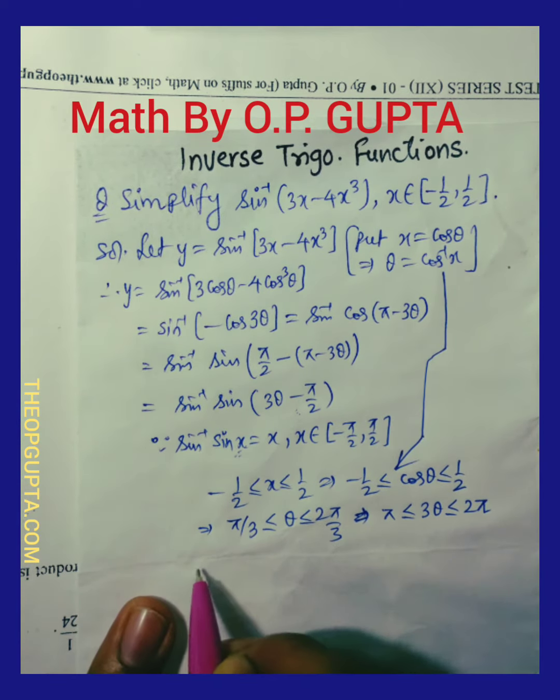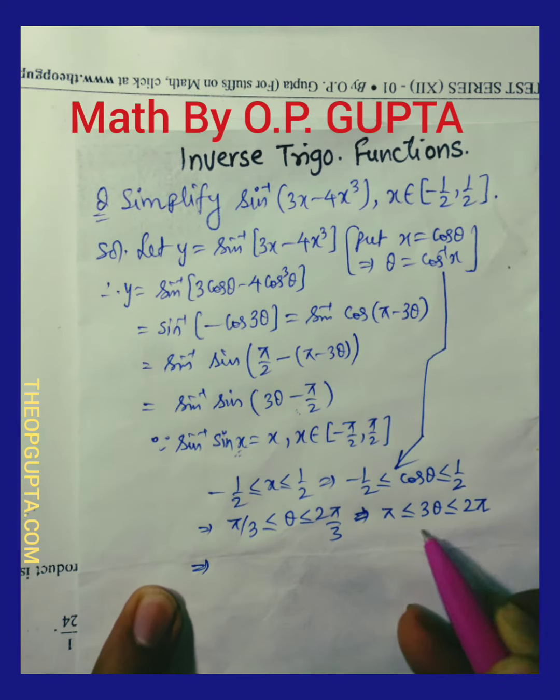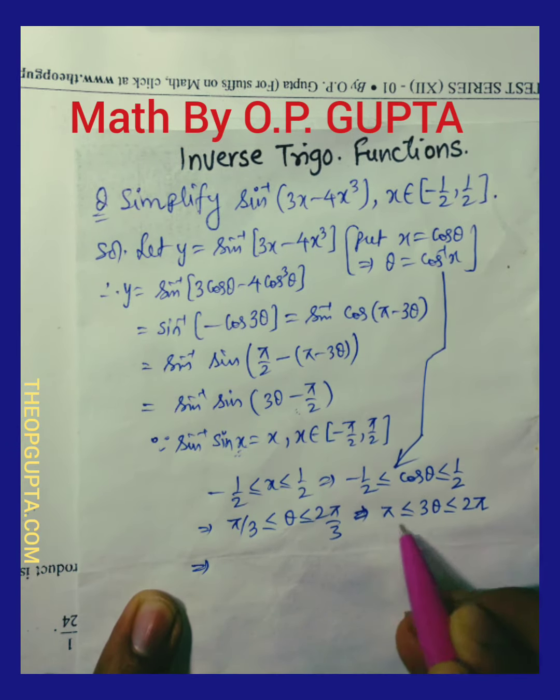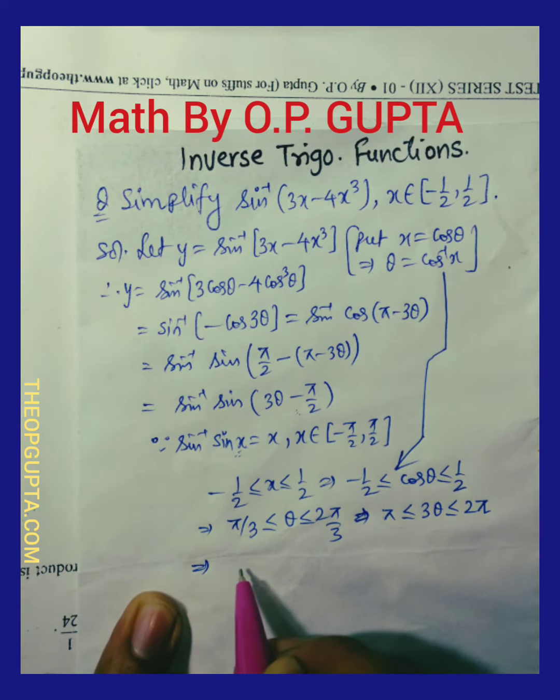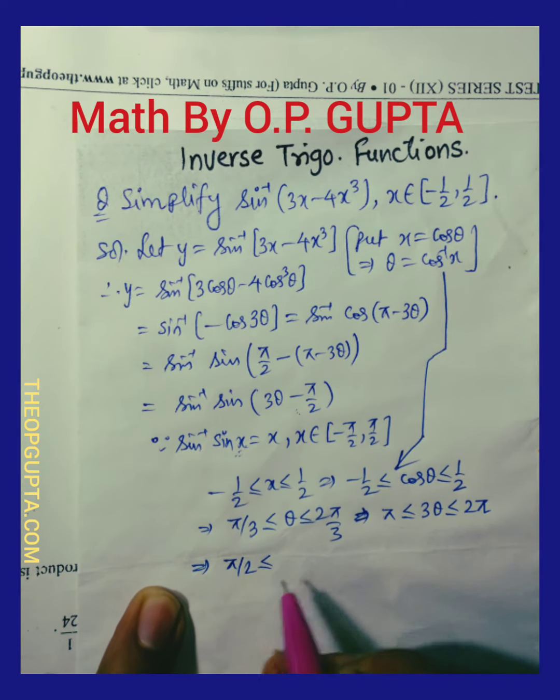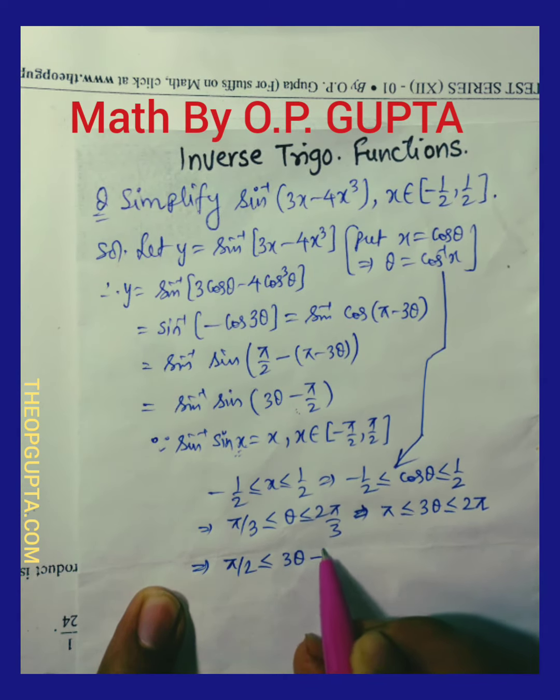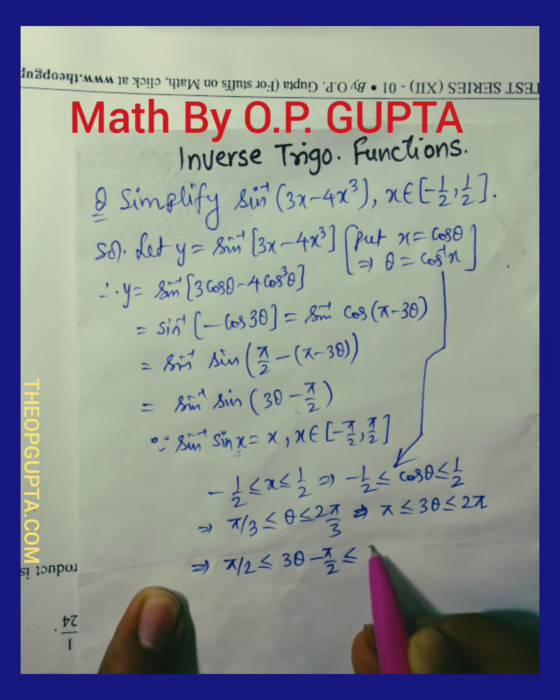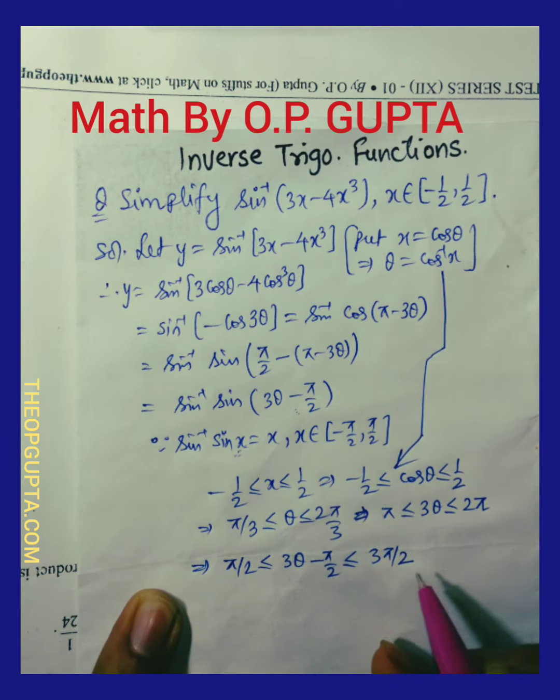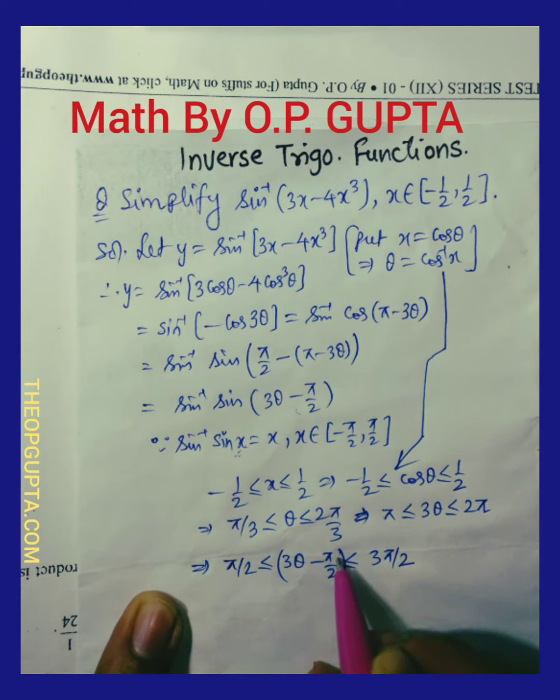And now if we can subtract pi by 2 completely from these three expressions, it will be pi by 2 less than equal to 3 theta minus pi by 2, which is further less than equal to 3 pi by 2.